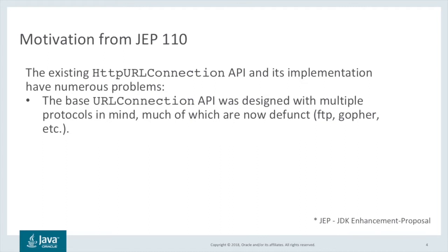URL Connection was added in JDK 1.0 back in 1996 and is protocol agnostic. It supports multiple protocols like FTP, MailTo, FileAccess, at one point Gopher, as well as HTTP.